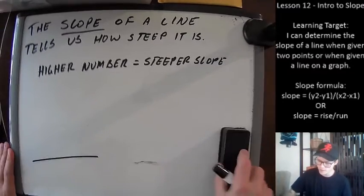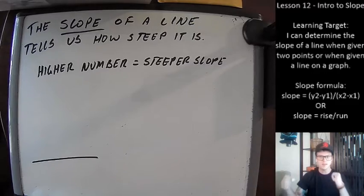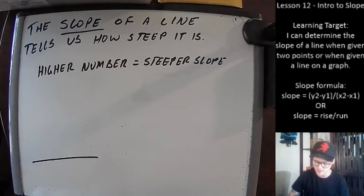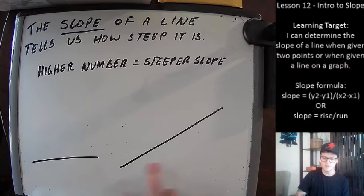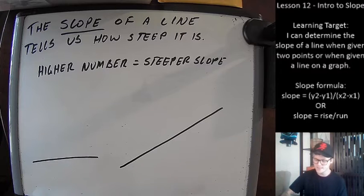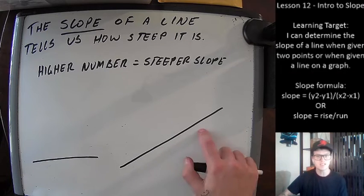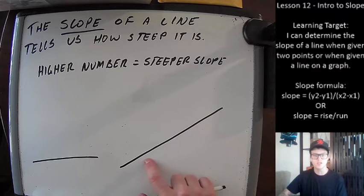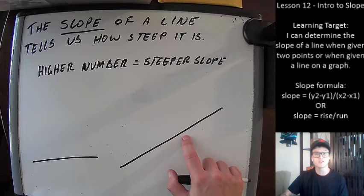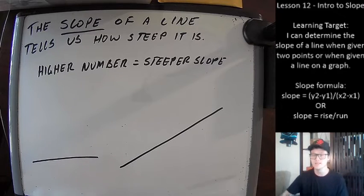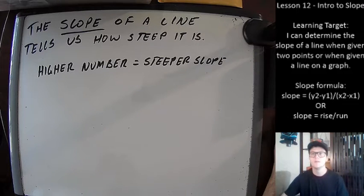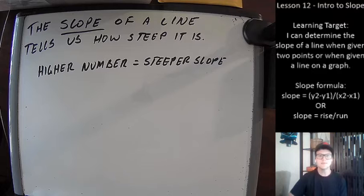Maybe I feel like working hard and want to do some hill repeats to get my legs strong — I'm going to go up a steeper hill. The difference in the slope of these two lines, these two hills, is that this one is much steeper. It's going to be harder and more challenging to go up, and we'd say its slope is greater. In contrast, the other one has a lesser slope — it is less steep.